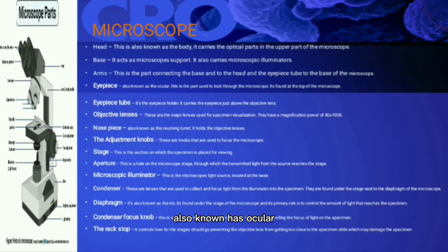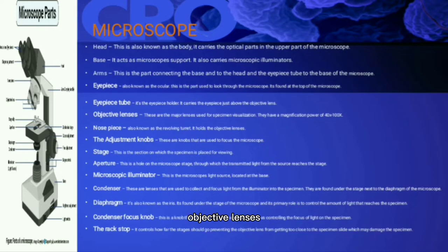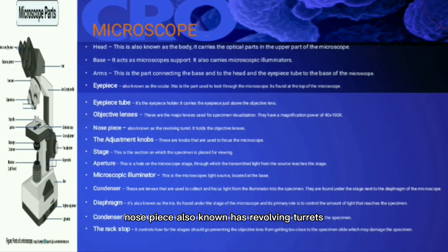Eyepiece — also known as ocular, this is the part used to look into the microscope. It is found at the top of the microscope. Eyepiece tube — also called the eyepiece holder, it carries the eyepiece just above the objective lens. Objective lenses — these are the major lenses used for specimen visualization. They have a magnification power of 40 to 100 times.